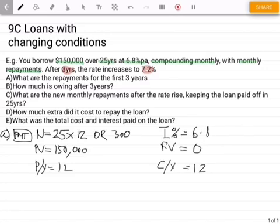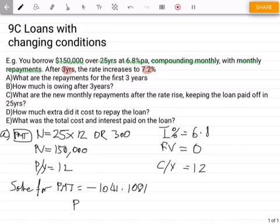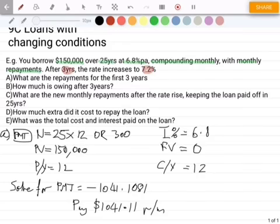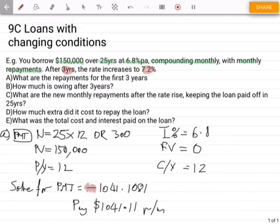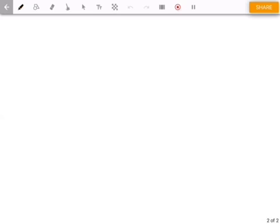Punch all that in. Click on your payment, so solve for payment. And you'll get a value of negative $1,041.11. And that tells us that you're going to pay $1,041.11 per month. As we've seen in some previous videos, that negative is telling us that we're losing money - we're paying someone.